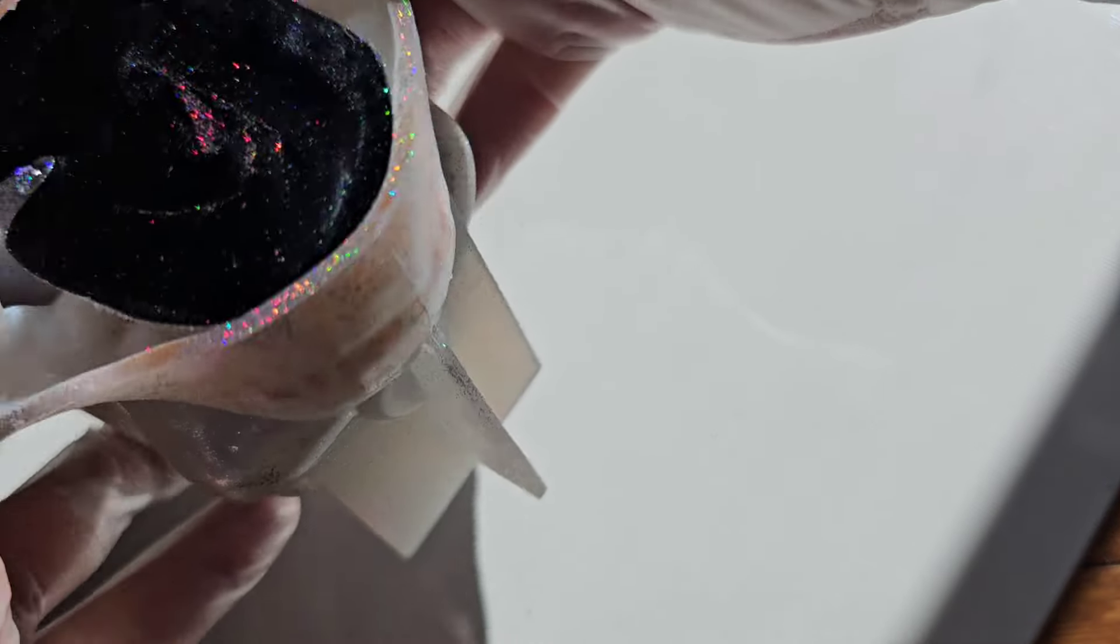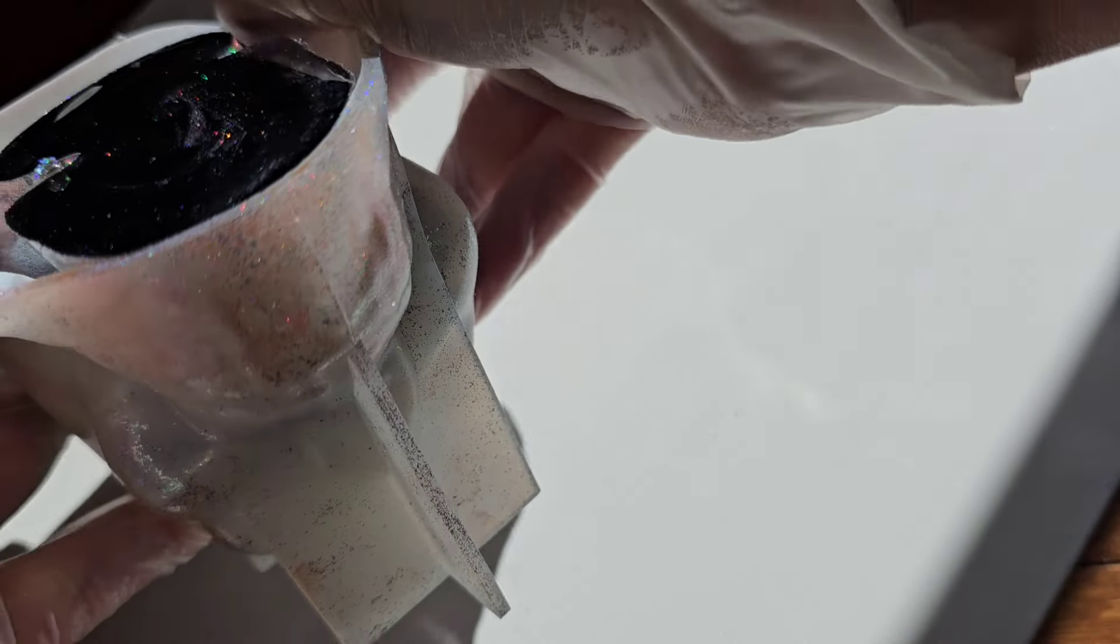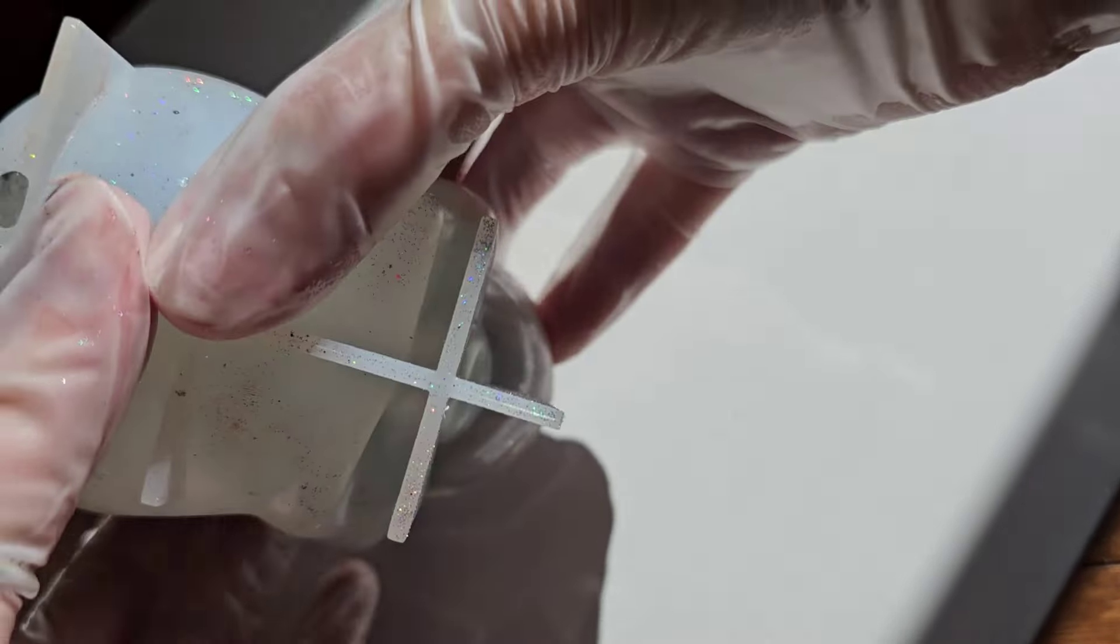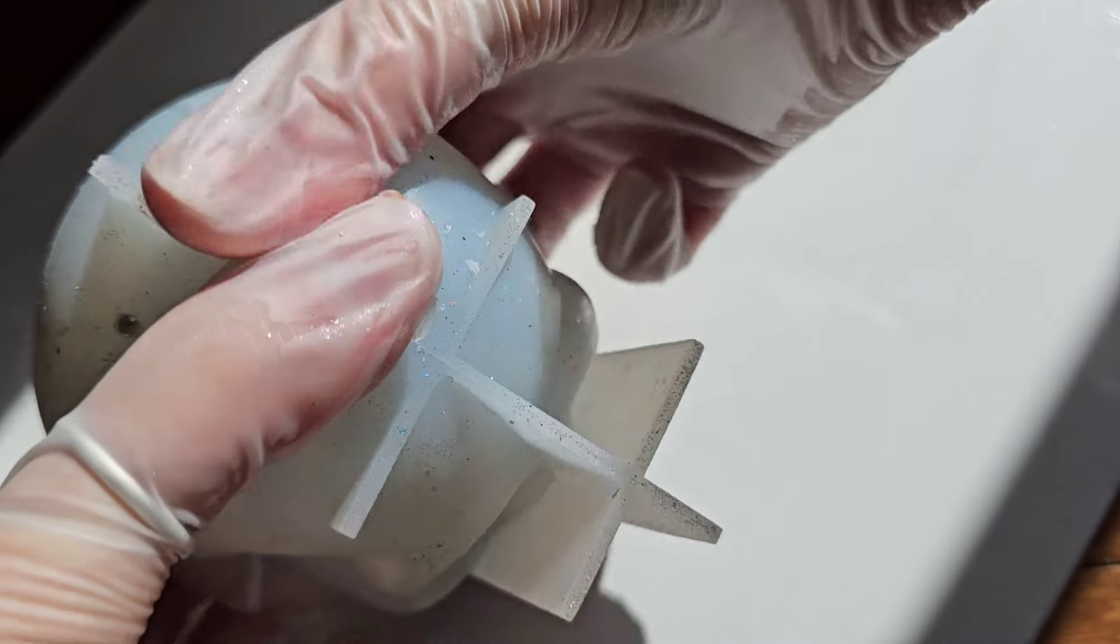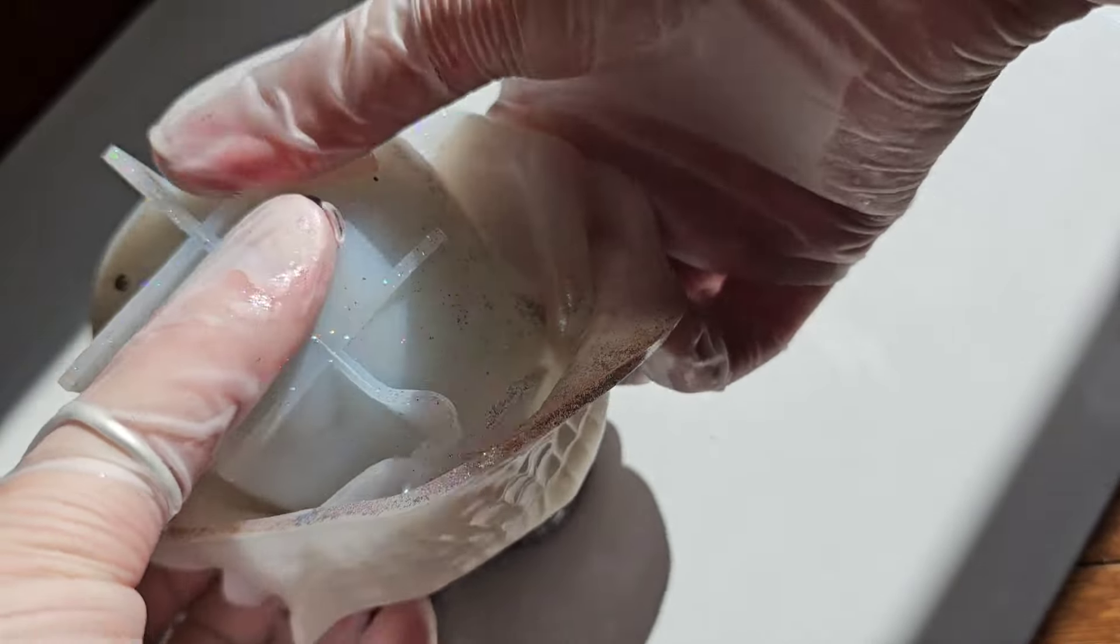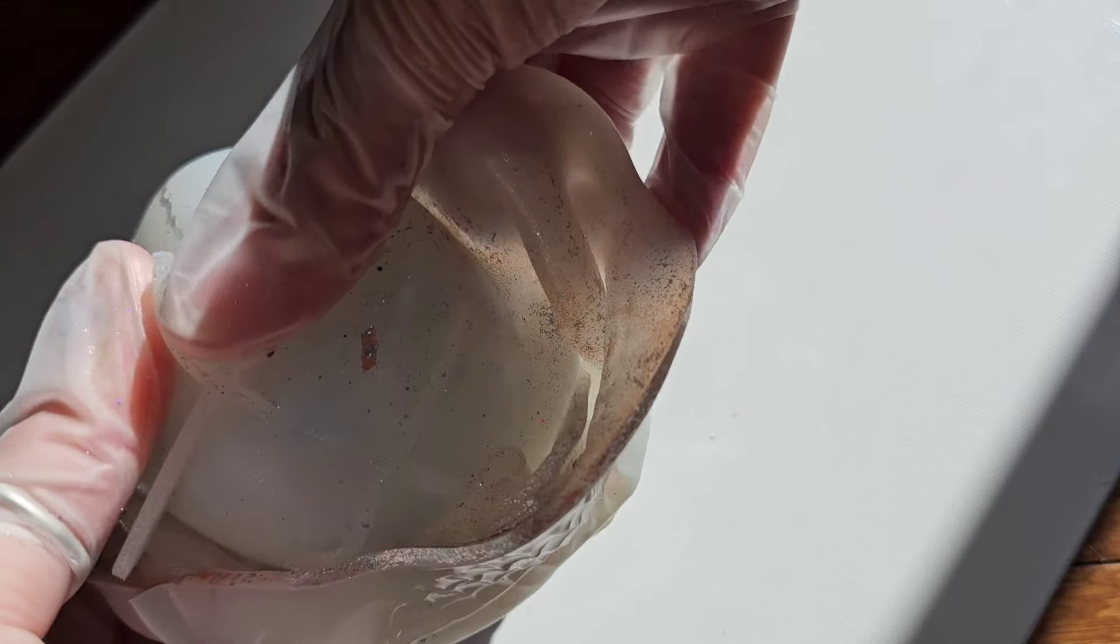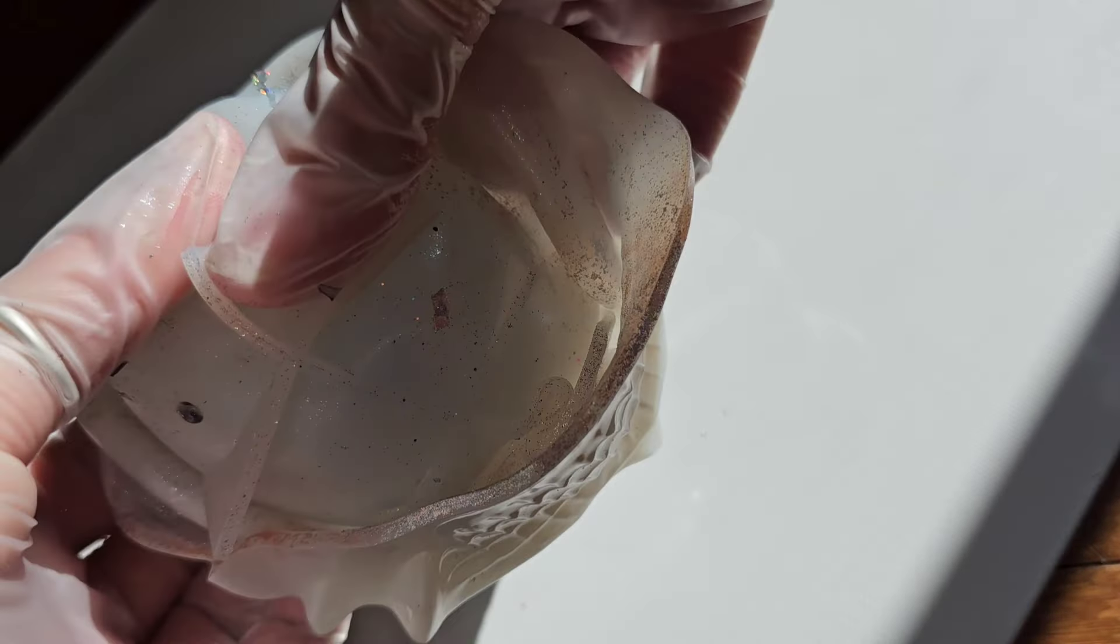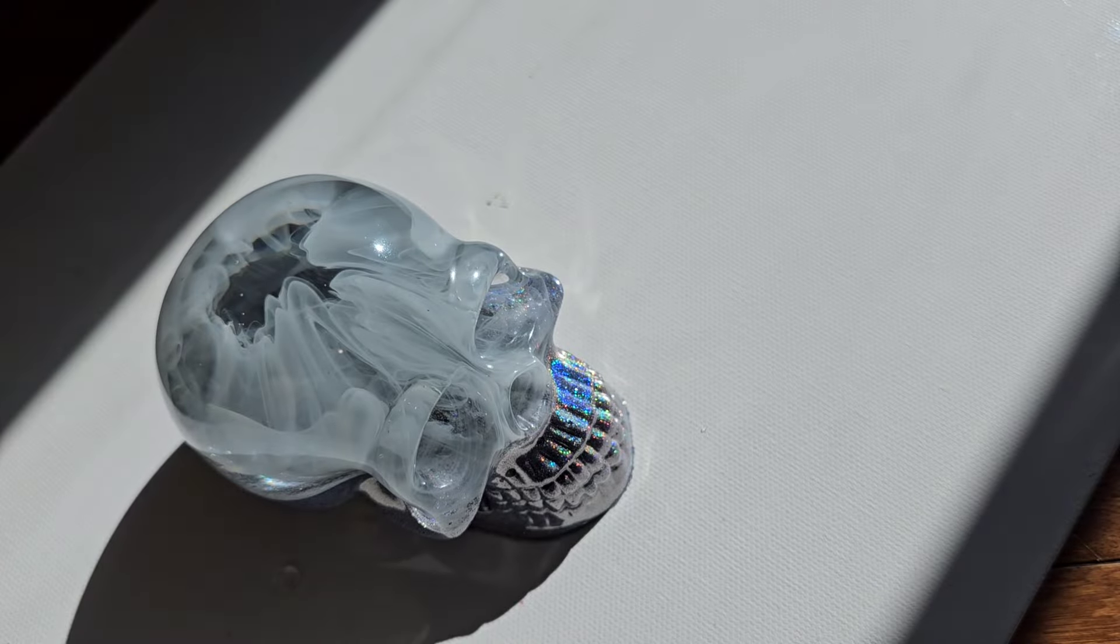Here we are getting ready to take it out of the mold. After you've used this mold a few times, these come out really easy. I just kind of break the seal on the sides and then flip it upside down like this. Take my thumbs, push from the top and peel up with my other fingers and it'll pop right out.